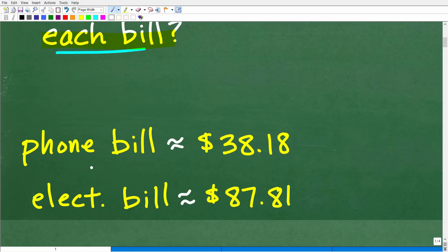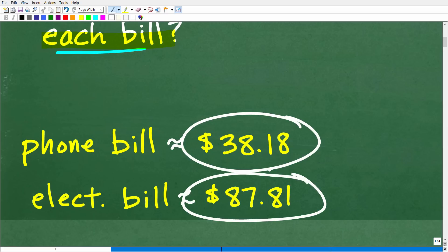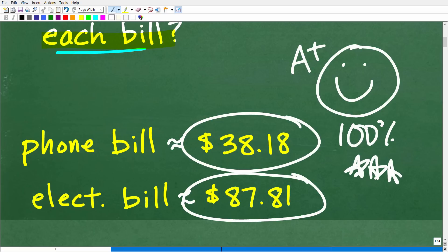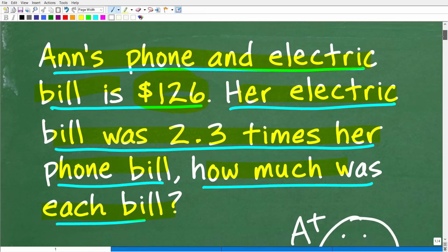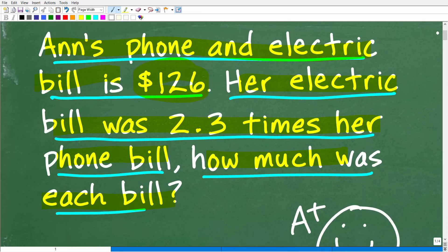The answer is the following. Her phone bill was approximately $38.18. And her electric bill is approximately $87.81. So if you're pretty close to this, maybe plus or minus a penny, well, it indicates to me that you did this problem right. Okay, so we have to celebrate by giving you a nice little happy face and A+, a 100%, and multiple stars so you can brag to your friends and family that indeed you are a professional, a certified expert in solving basic math word problems.